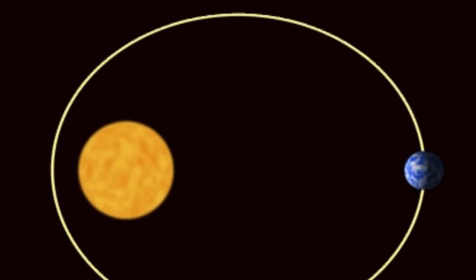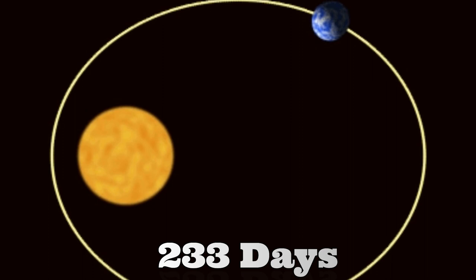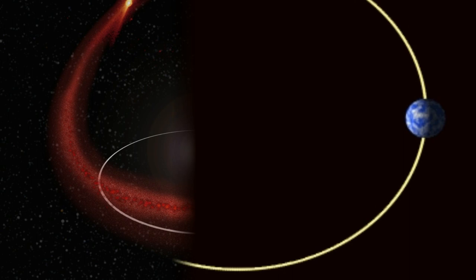It orbits a star named Barnard Star, a dim red dwarf, every 233 days, at roughly the same distance that Mercury orbits our Sun.